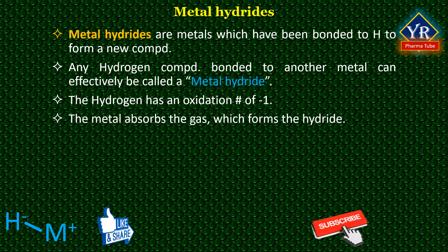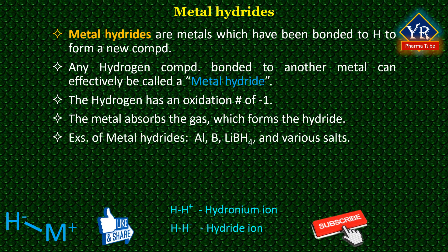H⁺ is the hydronium ion and H⁻ is the hydride ion. The most common examples of metal hydrides include aluminum, boron, lithium borohydride, and various salts. For example, aluminum hydrides include sodium aluminum hydride. There are also many more complex metal hydrides suitable for various uses.